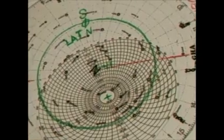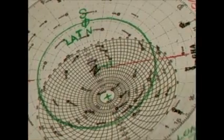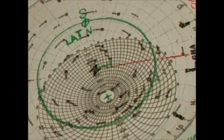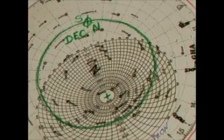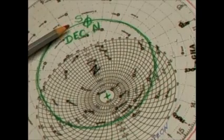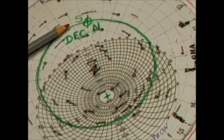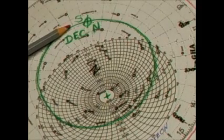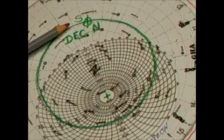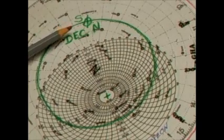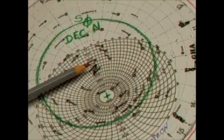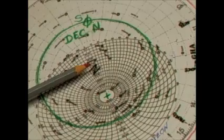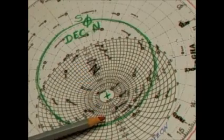Now let's look at the celestial system. It's very similar. Instead of having the equator called latitude with a value of zero, we call it declination. It's exactly the same thing. This is the North Pole, and this is declination. The declination is measured in degrees.